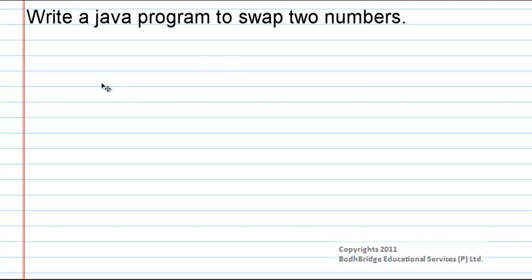Write a Java program to swap two numbers. In C and C++ we pass the reference of values to methods where we swap the two numbers. Since pointers are not available in Java, we cannot perform those actions. Here is the Java program for swapping two numbers.